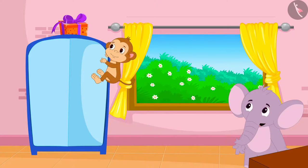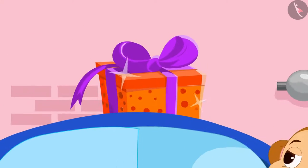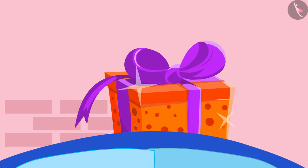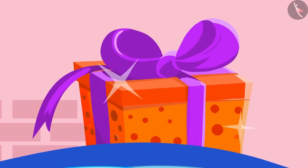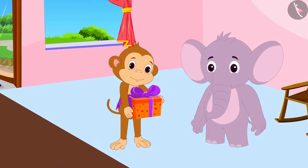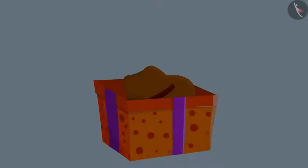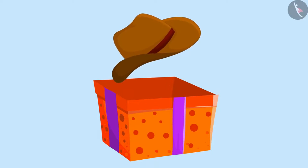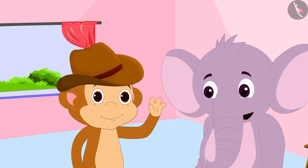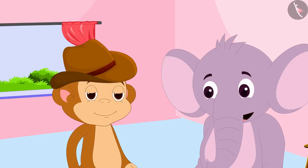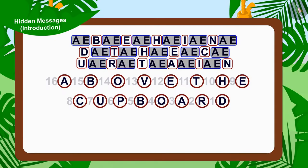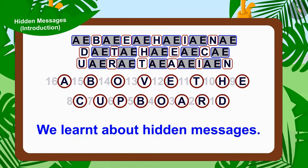When Baban quickly jumped on top of his cupboard, he saw that there was a gift wrapped in shiny paper there. Appu had actually hidden a cap as a gift for him there. Baban was very happy to get his new cap. Children, in this video we learnt about hidden messages. In the next video, we will see some more interesting examples related to this.